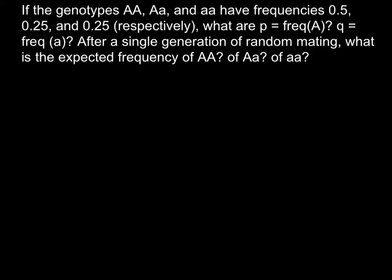Hi, today I have another problem about population genetics. Here is the problem: If the genotypes AA, Aa, and aa have frequencies 0.5, 0.25, and 0.25 respectively, what are the p frequencies of the dominant allele A and what is the q frequency of the recessive allele a? After a single generation of random mating, what is the expected frequency of the homozygous dominant, heterozygous, and homozygous recessive?